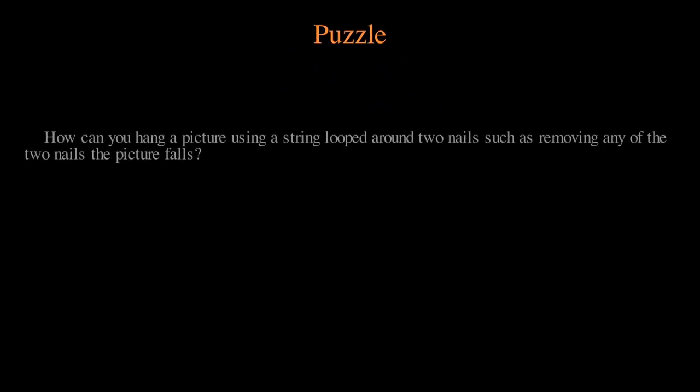And now, with all the accumulated knowledge about knot theory, we should be able to solve our puzzle which asks us the next question. How can you hang a picture using a string looped around two nails, such that removing any of the two nails causes the picture to fall? As we all see, the puzzle can be generalized. Instead of having a total of two nails, we could have n,